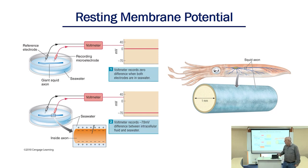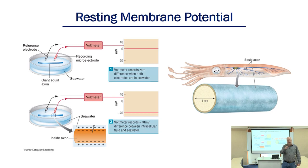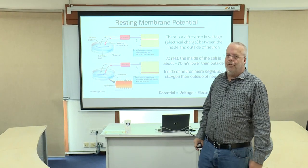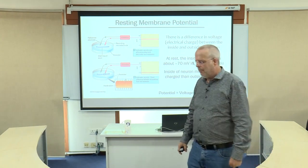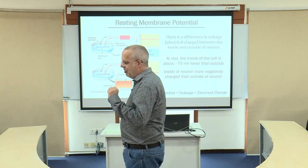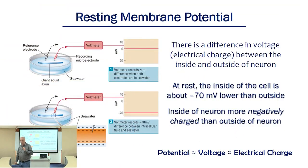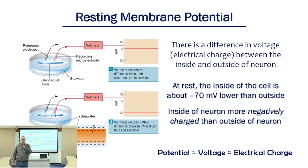But if you take one lead and keep it in the solution, and the other lead you place inside of the neuron, we find that the inside of the neuron is electrically negative relative to the outside. And in fact, this seems to be the case for virtually every neuron that we have recorded from. In this case, the inside is about negative 70 millivolts more negative.